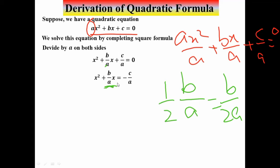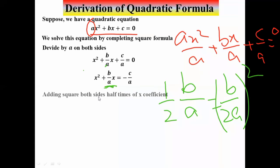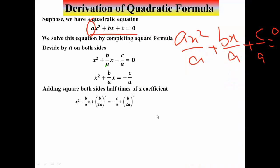We divide the coefficient of x by 2 and add its square to both sides. Taking b/a divided by 2 gives b/2a, and we add (b/2a)² to both sides. This is done in order to complete the square on the left side.